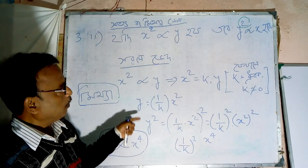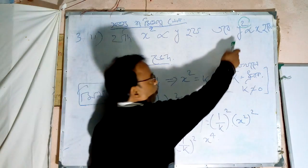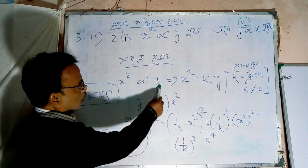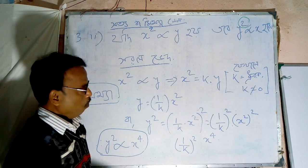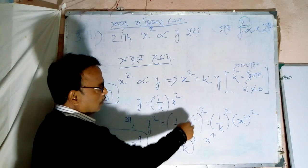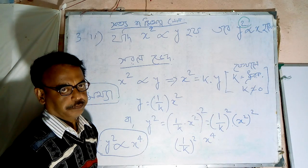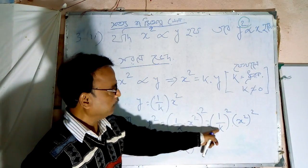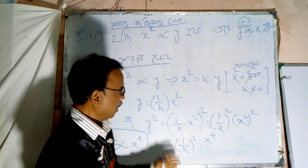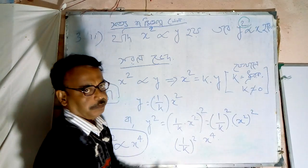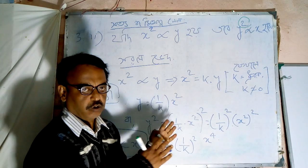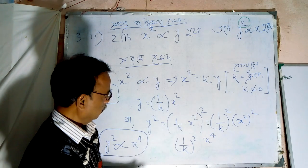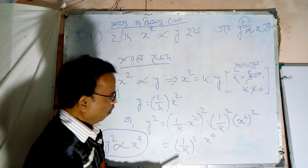Here we work with y square, 1 by K into x square, square square. 1 by k squared into x squared whole squared. 1 by k squared into x squared, x squared is equal to x squared.